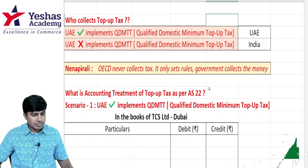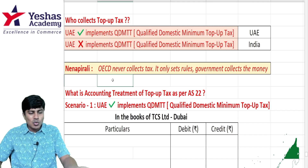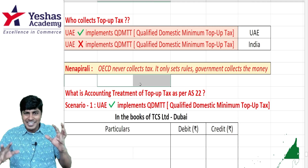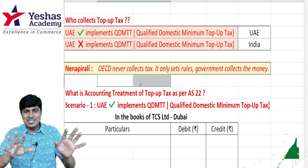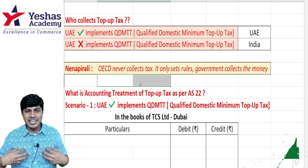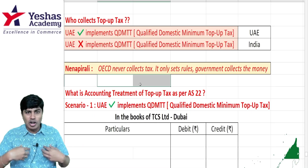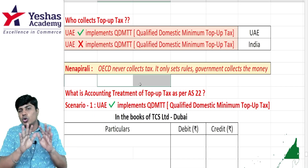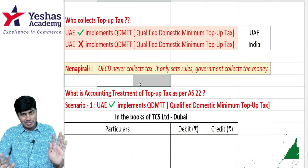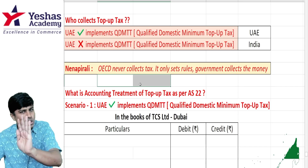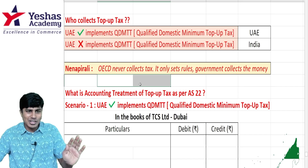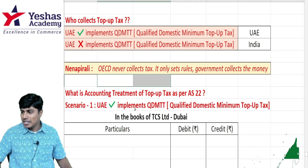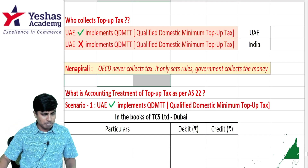Going further — OECD never collects tax. OECD is not a government. OECD just tells who should collect how much tax. Let's go to the next part: what is the accounting treatment of this top-up tax as per Accounting Standard 22? This is almost like the climax of this entire concept.